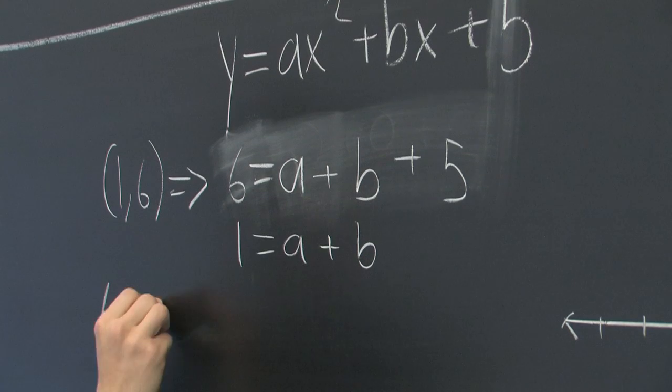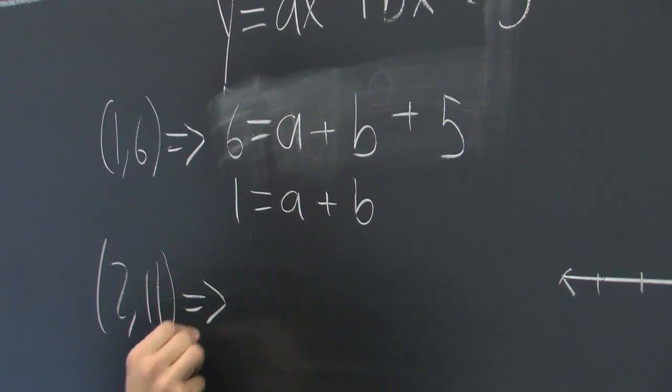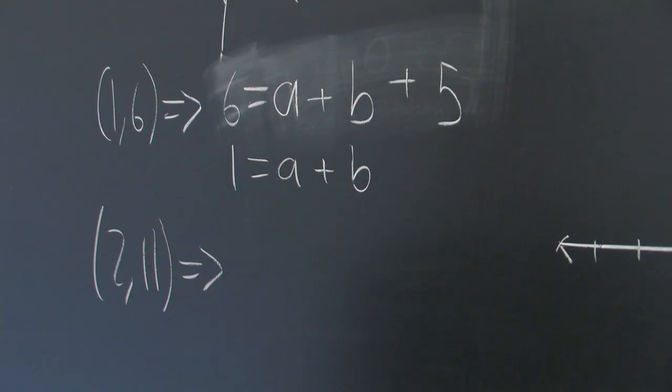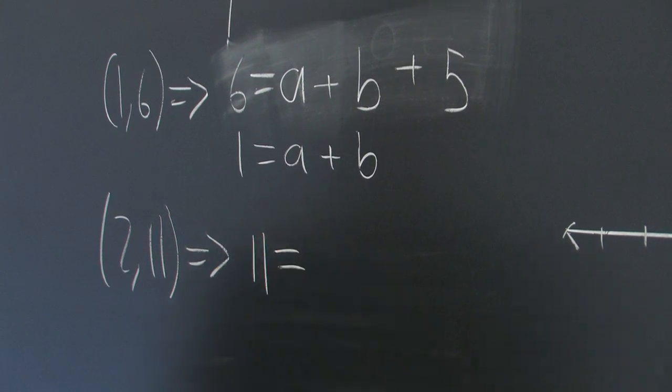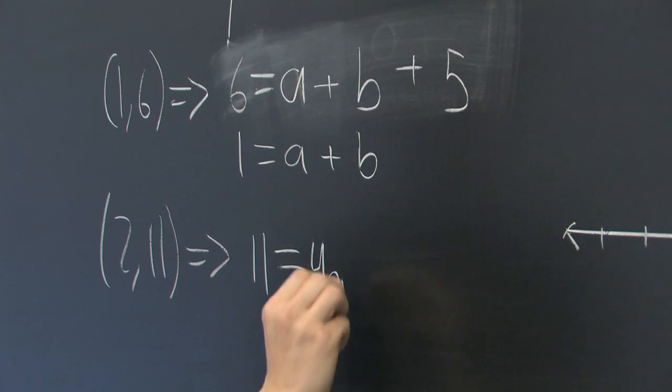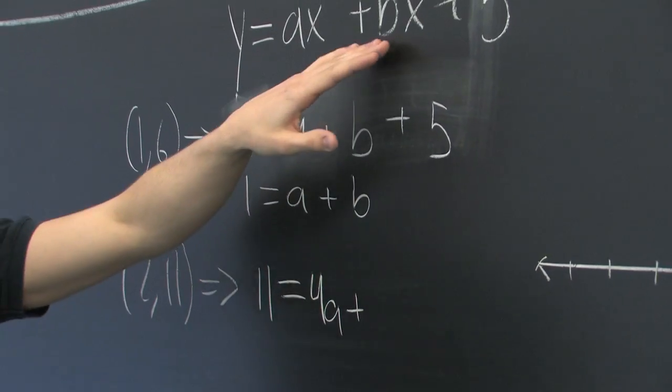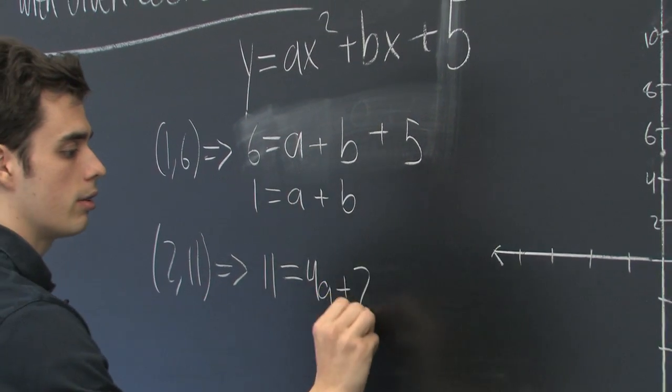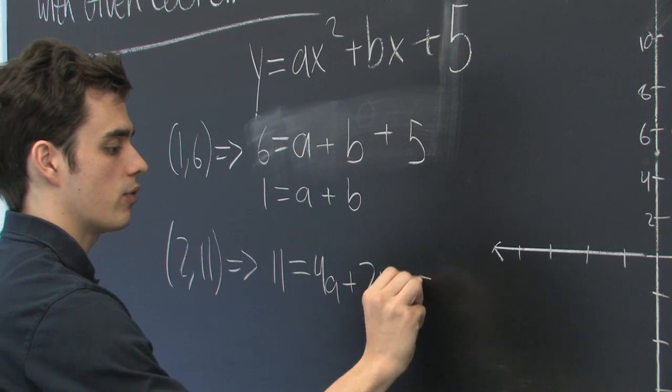And we'll get that by plugging in our remaining point, 2, 11. That tells us that 11 is equal to a times 2 squared, so we get 4a plus b times 2, 2b plus 5.